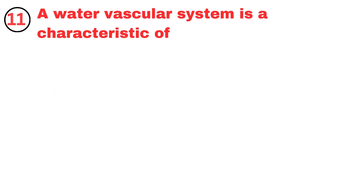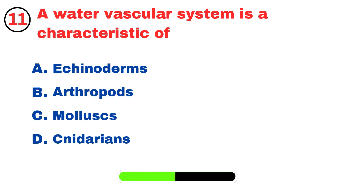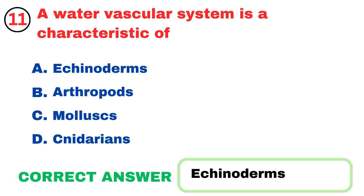A water vascular system is a characteristic of? Echinoderms.